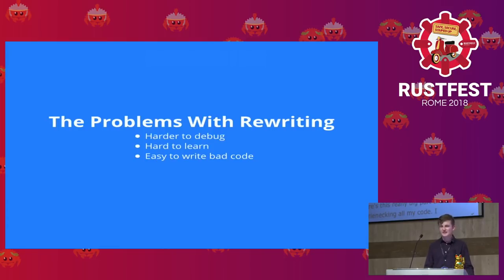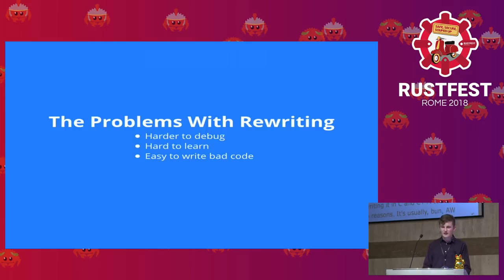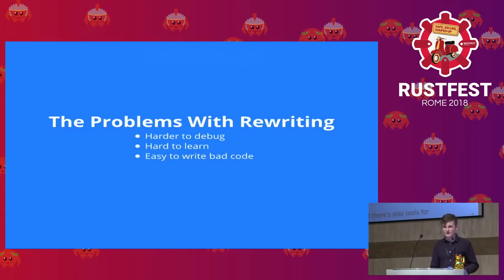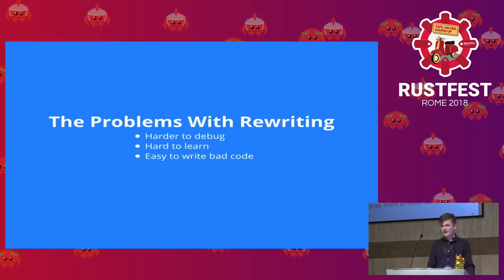There are a few problems with rewriting a big section of your code in C++, especially if you don't have much experience. First, it's harder to debug. If you don't have a lot of experience, it's easy to take a guess-and-check approach — write a little, open a REPL, see if it works. That's a lot harder when you use a compiled language like C, because you can't iterate as fast.